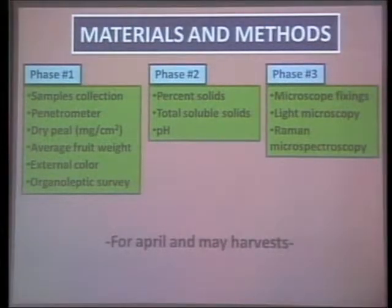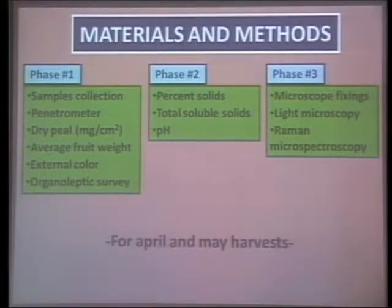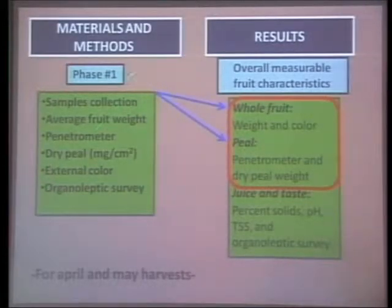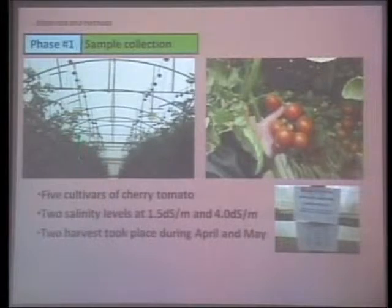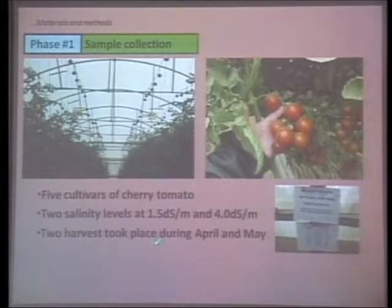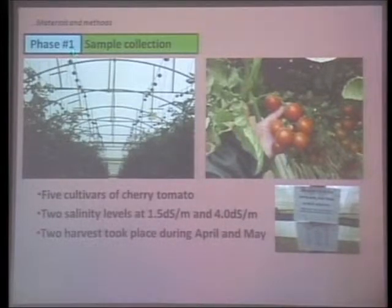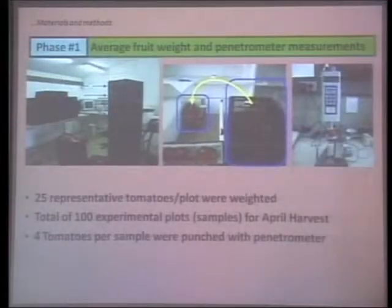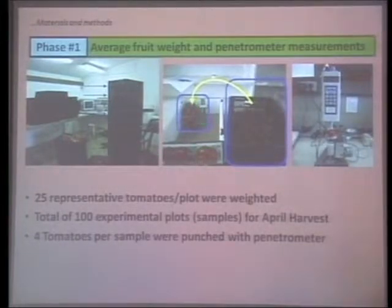We divided our materials and methods into three phases. In the first phase, we didn't destroy our samples; in the second, we did; and the third involved microscopic analysis. For phase one, we set up the experiment in Ramat Negev, Israel, with five different cherry tomato cultivars grown at 1.5 and 4.0. We had 100 experimental plots. At marketable stage, we harvested all clusters from the whole plot into a black bin, then took only five clusters as our sample for all measurements.